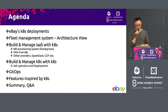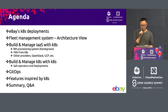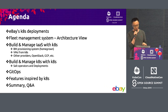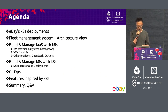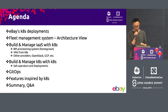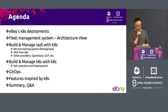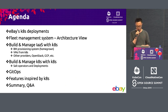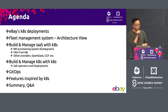So this is the agenda. I'm going to give a very quick introduction first on eBay's Kubernetes deployments, and after that I'm going to introduce our fleet management system based on Kubernetes that views and runs our private cloud. In a deeper dive of that system, I'll walk through the way we view and manage IaaS with Kubernetes, and in the end I'll share our GitOps practices to run our fleet and lots of our cool features inspired by Kubernetes.